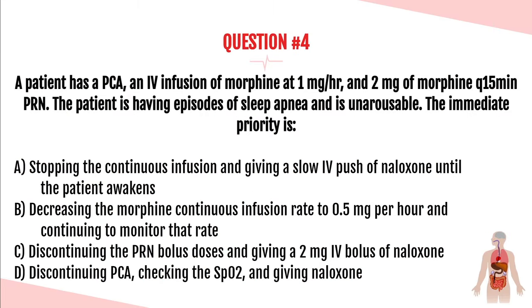Question number four. A patient has a PCA with an IV infusion of morphine at 1 mg/hour and 2 mg of morphine Q15 minutes PRN. The patient is having episodes of sleep apnea and is unarousable. The immediate priority is: A, stopping the continuous infusion and giving a slow IV push of naloxone until the patient awakens; B, decreasing the morphine continuous infusion to 0.5 mg/hour; C, discontinuing the PRN bolus doses and giving a 2 mg IV bolus of naloxone; or D, discontinuing the PCA, checking SpO2, and giving naloxone.